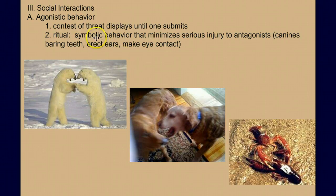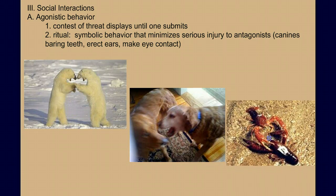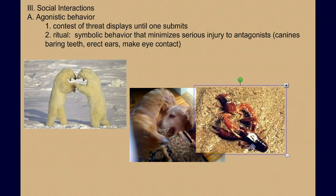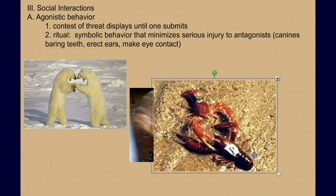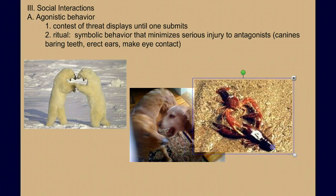When we look at these agonistic behaviors — contests, threats, and displays — one organism usually submits before any real damage is done. This display helps avoid conflict that would be detrimental to everyone. It may be baring of teeth, or like these lobsters sizing each other up. As soon as one realizes the other is bigger and stronger and likely to win, the eventual loser backs away and acquiesces, and thus we avoid the conflict.